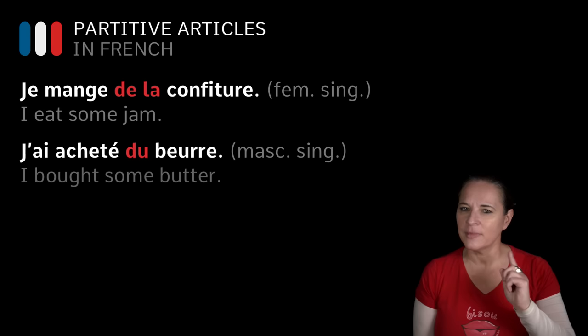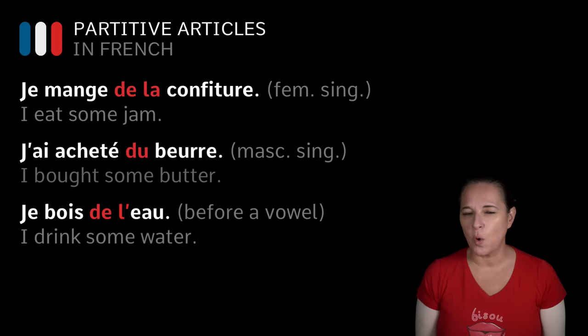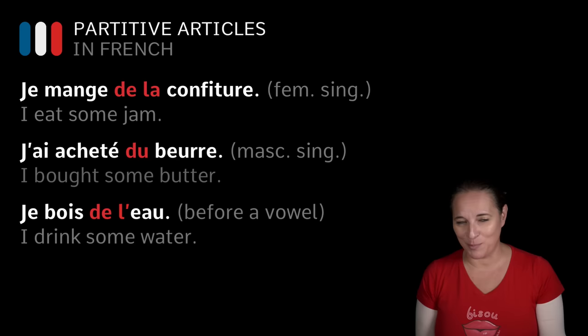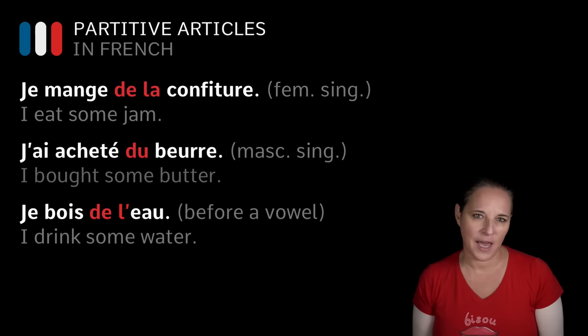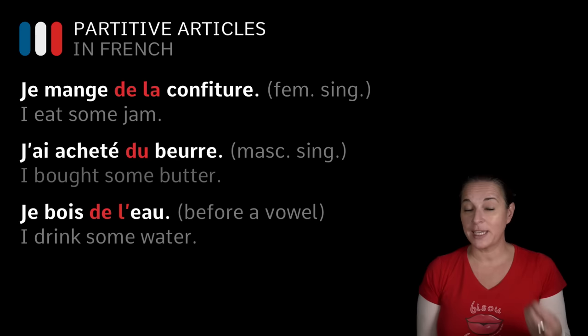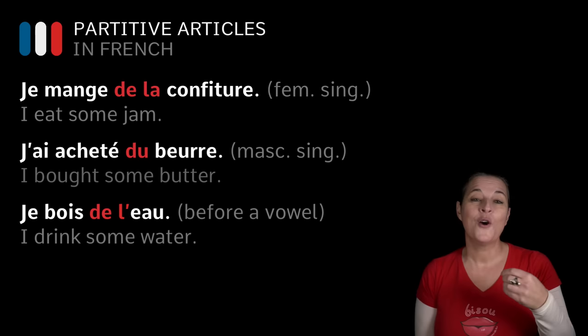Let's have a look at this one: 'Je bois de l'eau' — I drink some water. In this case, it says DE L' with an apostrophe — DE L'eau — because EAU begins with a vowel. EAU is actually a feminine word, but it starts with a vowel. So regardless of whether it's feminine or masculine, if it starts with a vowel, voilà, we use DE L'apostrophe. In this case, water is feminine.